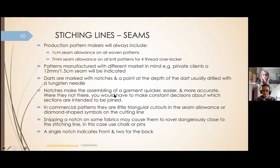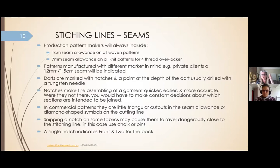Notches make it easier to assemble a garment quicker and for accuracy — the machinist is not having to make constant decisions about whether they've done it right. Notches on commercial patterns are normally indicated by little triangles or diamonds. In a factory they are never going to cut out that little triangle or diamond — when we cut out a pattern we actually cut into the notch so it's cut into the seam allowance.